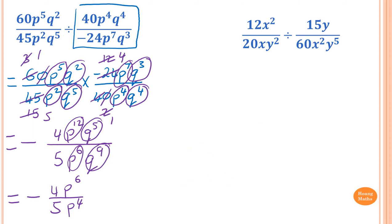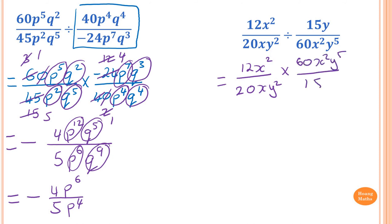Flip the second fraction to make it multiplication. So it becomes 12x² over 20xy² times 60x²y⁵ over 15y. Simplify numerals: 60 and 20 divide by 10 giving 6 and 2; divide by 2 giving 3 and 1. Then 12 and 15 divide by 3 giving 4 and 5. So numerals give 12 on top and 5 on the bottom — that is, 3 times 4 is 12.